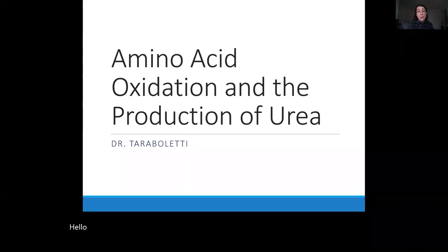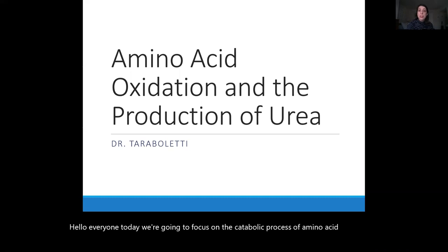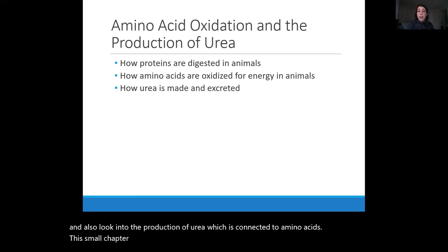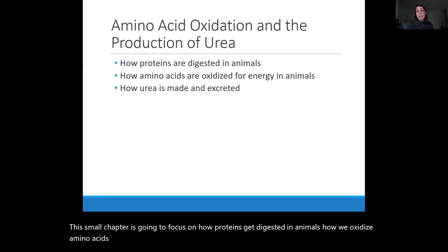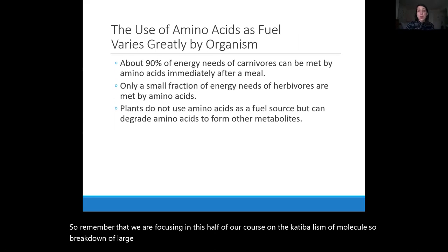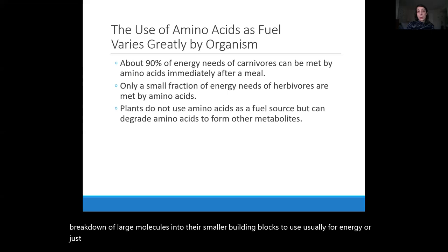Today we're going to focus on the catabolic process of amino acid oxidation and also look into the production of urea, which is connected to amino acids. This small chapter is going to focus on how proteins get digested in animals, how we oxidize amino acids for energy, and how urea is made and excreted. We are focusing in this half of our course on the catabolism of molecules, usually for energy or in general metabolic processes in the body.